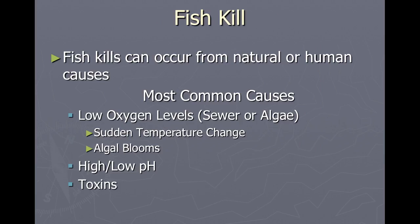Fish kills occur due to natural or human causes. The most likely causes result from a depletion of dissolved oxygen from temperature changes or algae blooms. Other causes, such as pH and toxins, can also be the culprit.